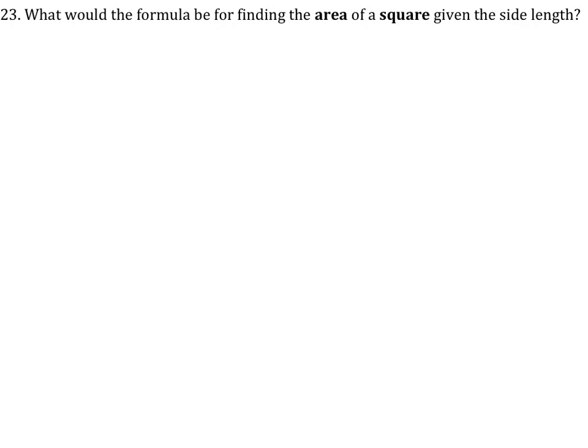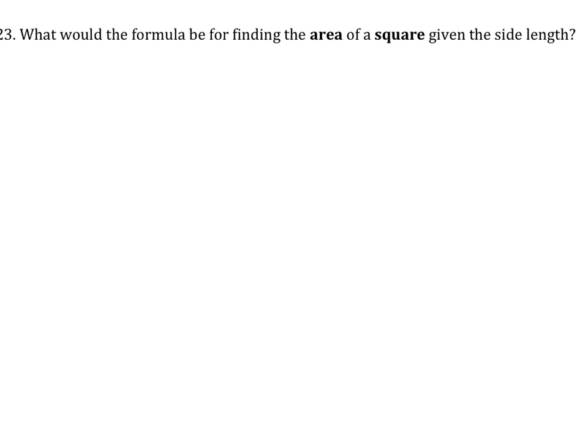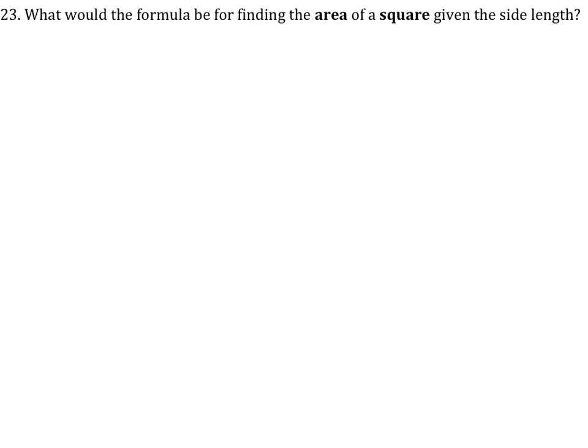What would the formula be for finding the area of a square given the side length? So if we have the side length, then it's the side length squared. Equals area.